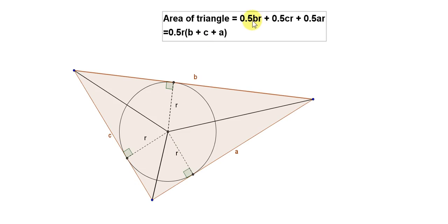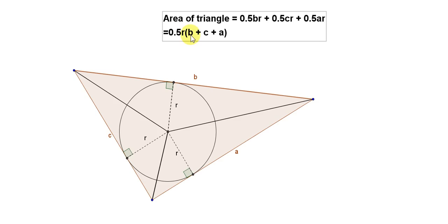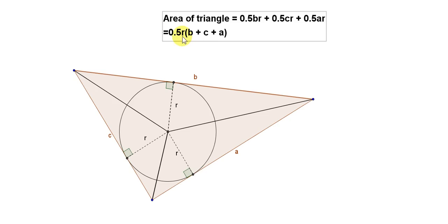Adding the three triangles together gives the big triangle. We can factor out ½ and R, so the area of the big triangle is ½R times the sum of the three sides: ½R(A + B + C). If we know the area of the big triangle and the three sides, we can solve to find R.